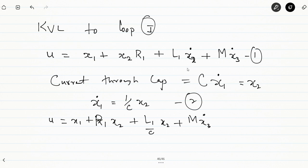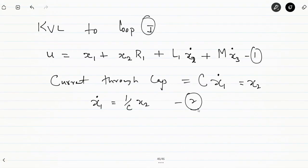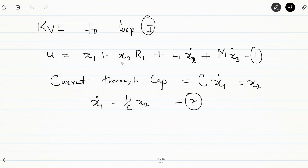To clarify: the state variables are X1 (voltage across C), X2 (current through L1), and X3 (current through L2). From KVL in loop 1: U = X1 + X2·R1 + L1·X2-dot + M·X3-dot. And from the capacitor current relation: X1-dot = (1/C)·X2. This is equation 2.